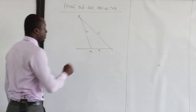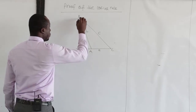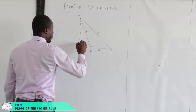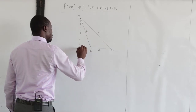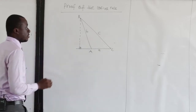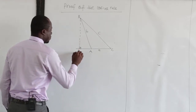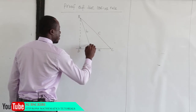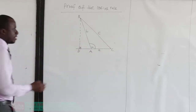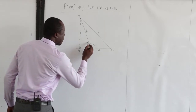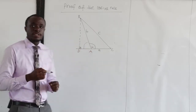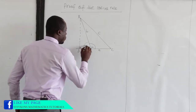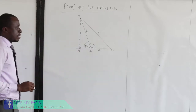Now let's produce a perpendicular from B to AC. Let's suppose this point is D. Now if the angle BAC is alpha, then since angles at a point sum to 180 degrees, the angle on the other side here becomes 180 minus alpha.